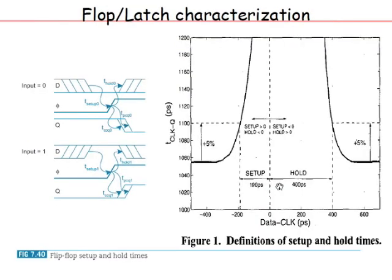To measure setup time, consider a positive-edge triggered flop with data D going from 1 to 0. The output Q transitions from high to low — capturing a 0. You measure the clock-to-Q delay. When the data transition happens well ahead of the clock edge, you get a nominal clock-to-Q delay. As the data edge moves closer and closer to the clock edge, the clock-to-Q delay starts increasing.